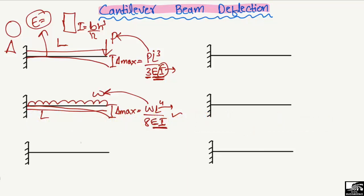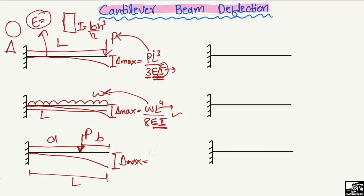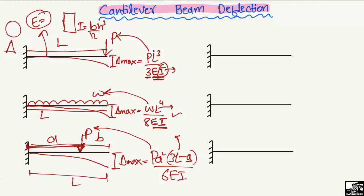The third case is when a point load P acts at an intermediate position — at a distance A from the fixed end and B from the free end. The maximum deflection still occurs at the free end. In this case, the maximum deflection is equal to Pa² multiplied by (3L minus a), divided by 6EI, where P is the point load, a is the distance from the fixed support to the load, L is the total beam length, and EI is the elasticity and moment of inertia of the beam.